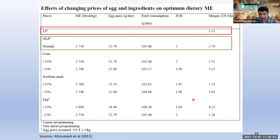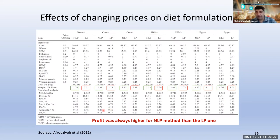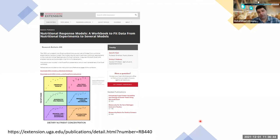We examined normal conditions and then increased or decreased corn price, soybean meal price, and egg price to see what happened to energy level, predicted egg mass, feed consumption, and margin. The take-home message is: profit was always higher for the NLP method (maximum profit feed formulation) than the LP method (least cost feed formulation) across all market scenarios. We really need to use maximum profit feed formulation.